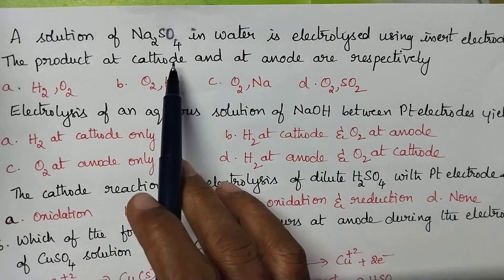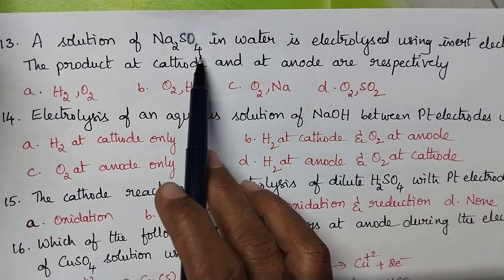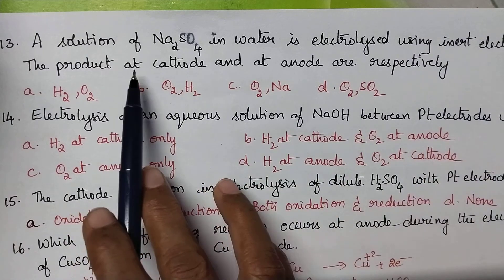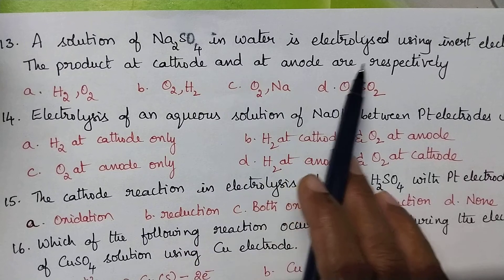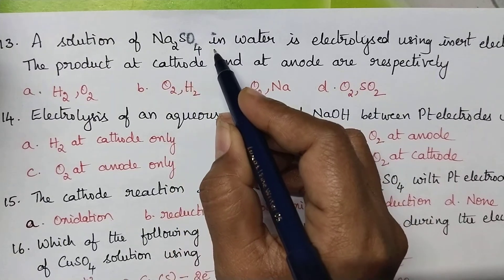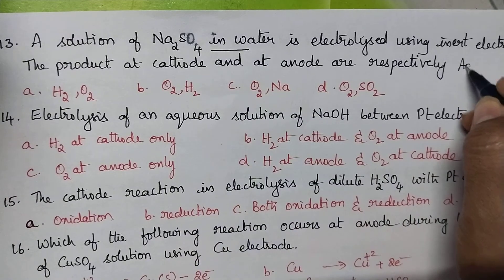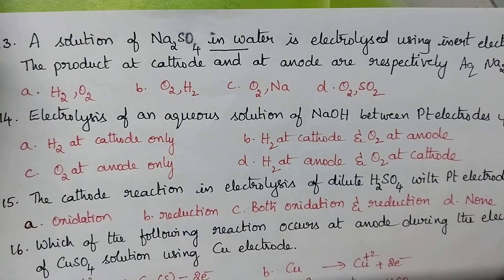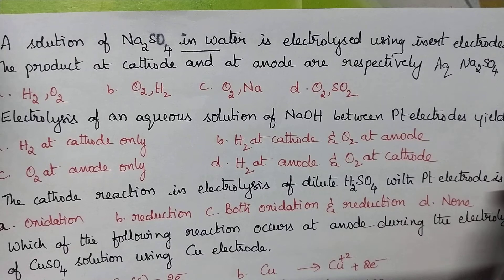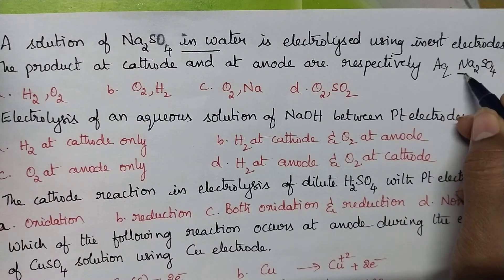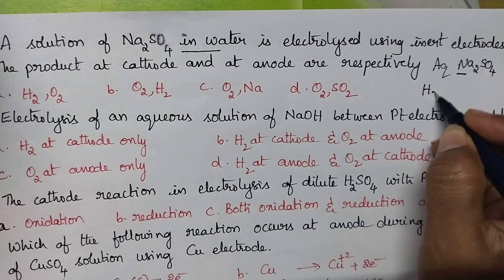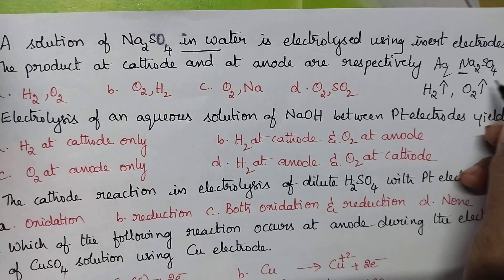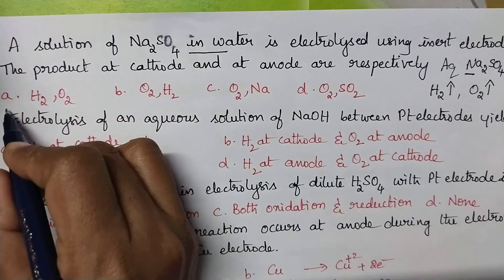A solution of sodium sulphate in water is electrolyzed using inert electrodes — what are the products at the cathode and anode respectively? Since this is an aqueous sodium sulphate solution and the metal is other than a noble metal, at the cathode hydrogen gas is liberated and at the anode oxygen gas is liberated. Option A is the right answer.